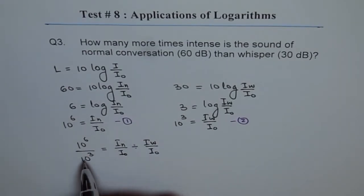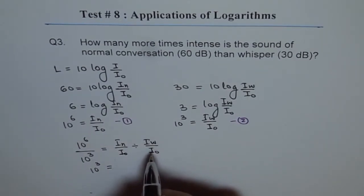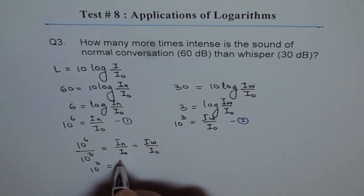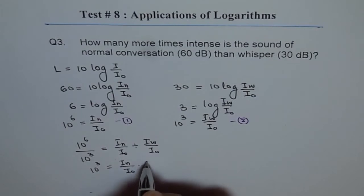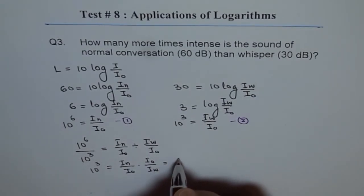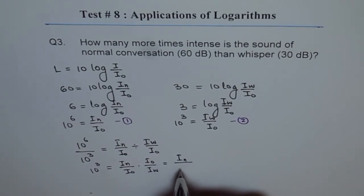And that gives us 10 to the power of 3 equals, so when you divide, it is as good as multiplying by its reciprocal. Let me write that first. IN over I0 times I0 over I whisper, which is I normal conversation over I whisper.